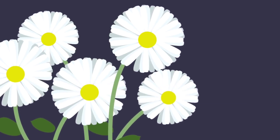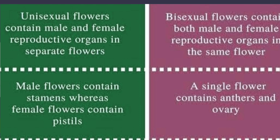One is the unisexual flower and another one is the bisexual flower. Unisexual flowers contain male and female reproductive organs in separate flowers, whereas in bisexual flowers they contain both the male and female reproductive organs in the same flower. Male flowers contain stamen whereas female flowers contain pistil, whereas a bisexual flower contains both stamen as well as the ovary.